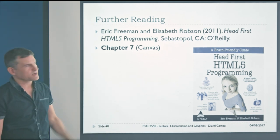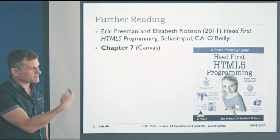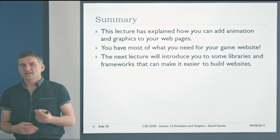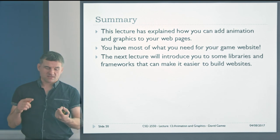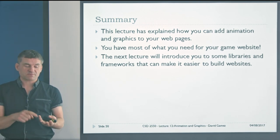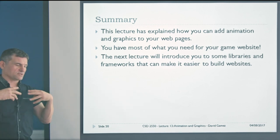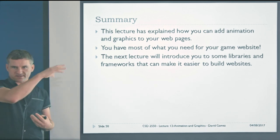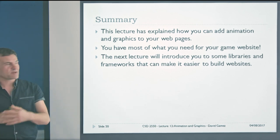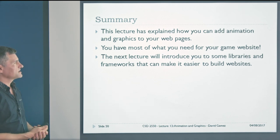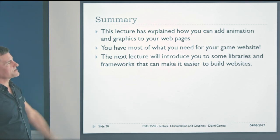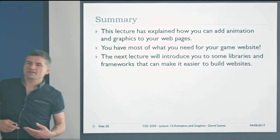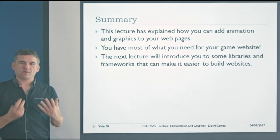The Head First HTML5 Programming course book has a bunch of material on how to use the canvas and do animation. This lecture has covered how you can add animation and graphics to your web pages. You've now got HTML, CSS, PHP, canvas, registration and login, local storage, and rankings — pretty much everything you need for your game website. In the next lecture, I'm going to talk about some libraries and frameworks that make it easier to build websites, such as Bootstrap and jQuery — third-party libraries that are well worth being aware of if you're going into web development.